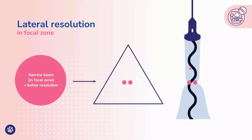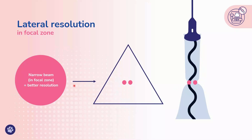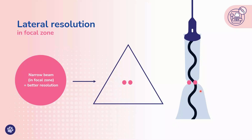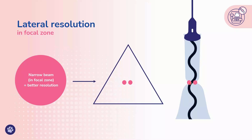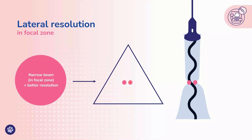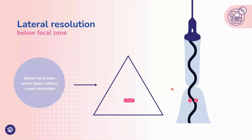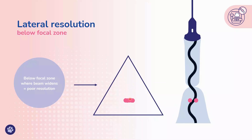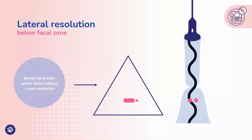Here we've got our sound beam and I'm depicting the thickness of the beam. We can see the level of the focal zone — also depicted by this arrow on our image — is where it's narrowest, and below we can see the beam widening. If we've got two lesions, we want them to be at the level of the focal zone. If they're small lesions they'll show up nice and accurate. In contrast, if the focal zone is too high above the lesions, where the beam widens, we get poor resolution and these lesions show up blurred together.